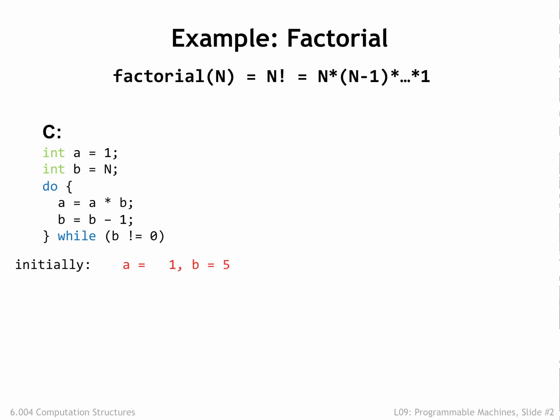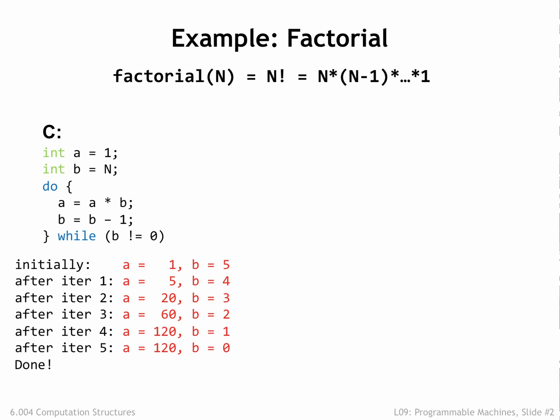The do loop is where the work gets done. On each loop iteration we perform one of the multiplies from the factorial formula, updating the value of the accumulator a with the result, then decrementing b in preparation for the next loop iteration.